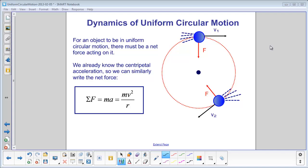For any object moving in uniform circular motion, there must be an acceleration towards the center. If there is an acceleration, there must be a net force acting on it.